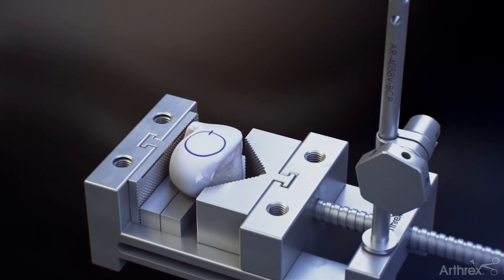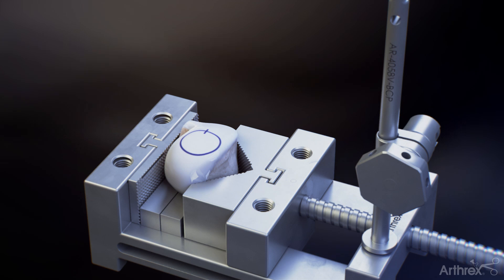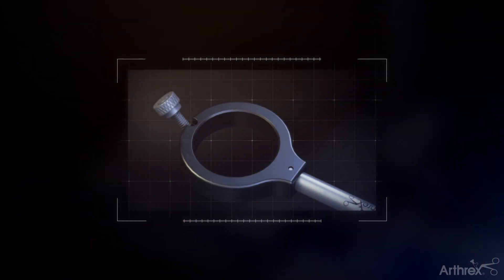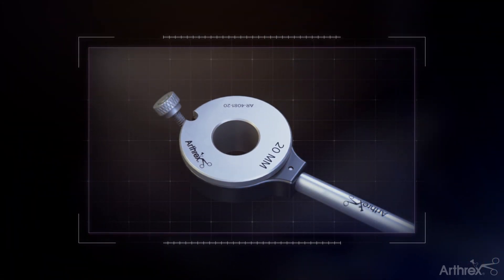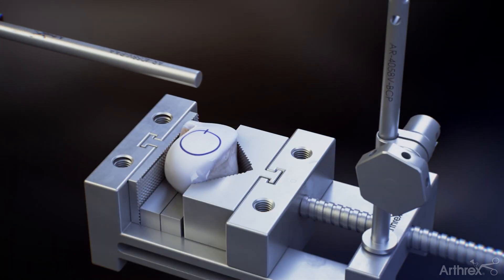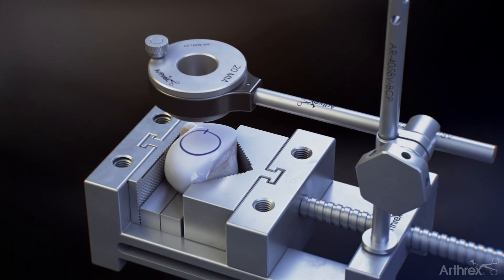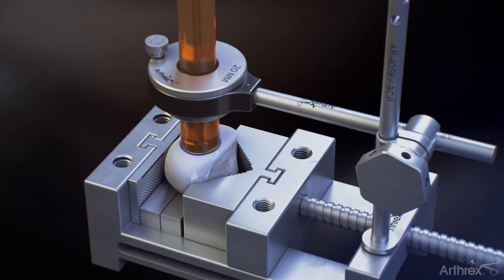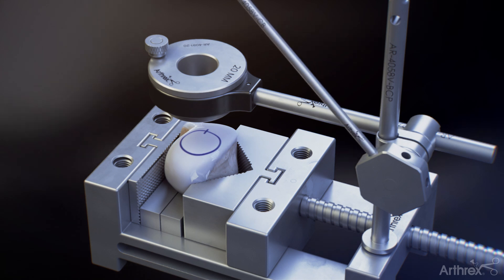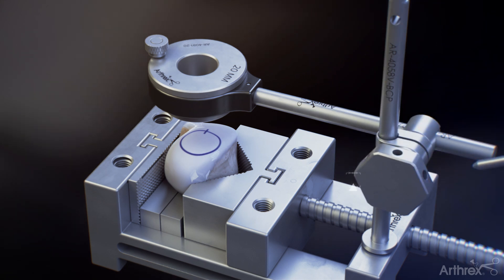Secure the donor allograft in the allograft OATS workstation. Place the appropriately sized allograft OATS workstation and bushing into the articulating arm housing. Move the articulating arm over the graft and set the exact angle necessary to match the recipient's contour. Use the OATS sizer to confirm you are perpendicular to the graft. Securely fasten the housing using the hexagon bolt and cheater bar.